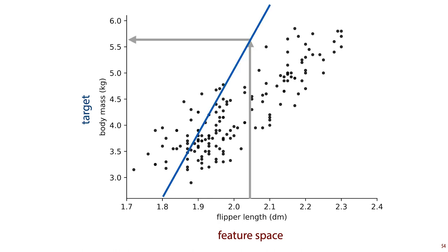We can once again use a linear model. We draw a line to help us predict the target feature. Note however how differently we're using the model. Previously, when we built a classifier, we wanted to segment the feature space into two classes. Now we're using the line to model the relation between the features and the target. The model has the same shape, but we're using it very differently.